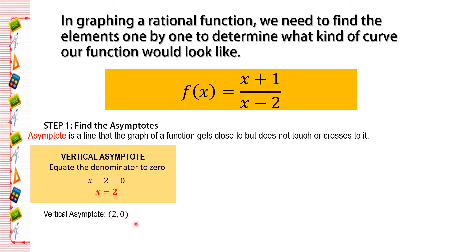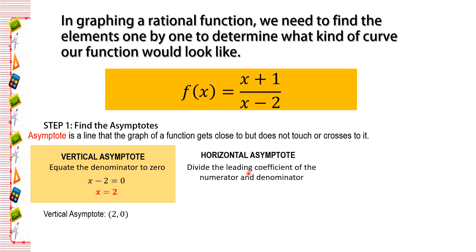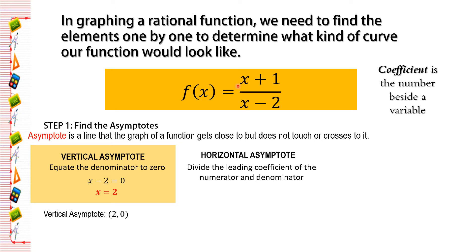We proceed to finding the horizontal asymptote. In finding the horizontal asymptote, we divide the leading coefficient of the numerator by that of the denominator. The coefficient is the number beside a variable. Since both x terms have an implied coefficient of 1, we write y equals 1 over 1, which equals 1. So y equals 1 is our horizontal asymptote.